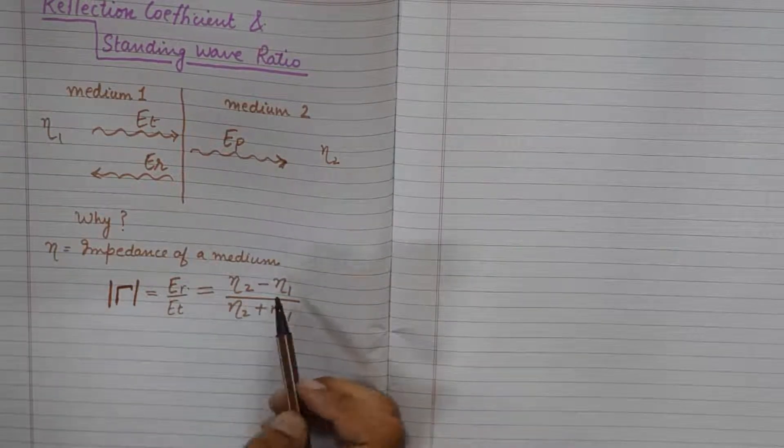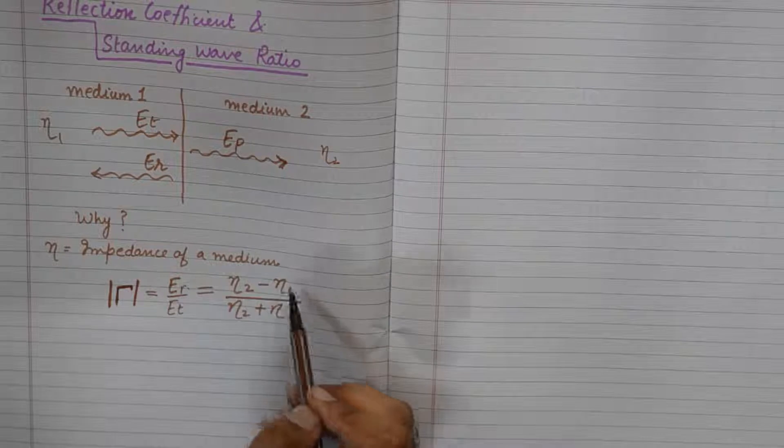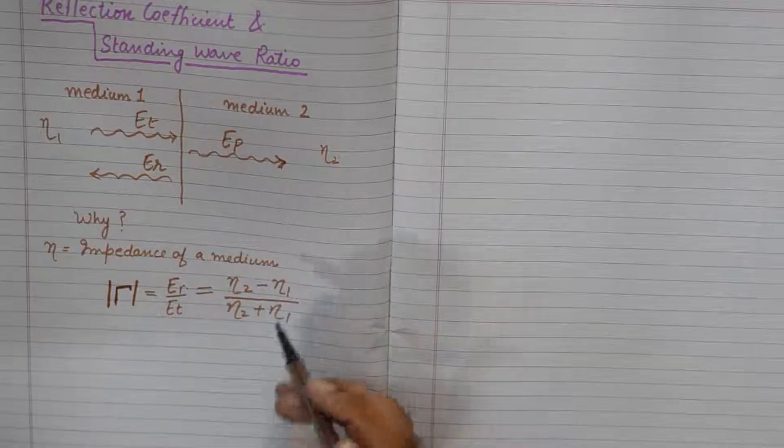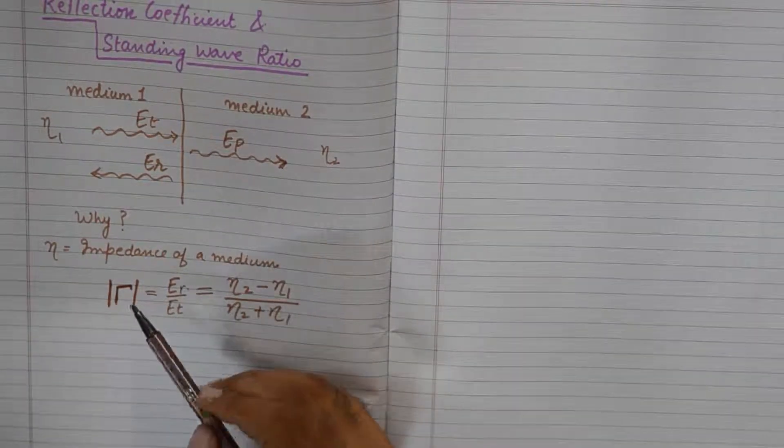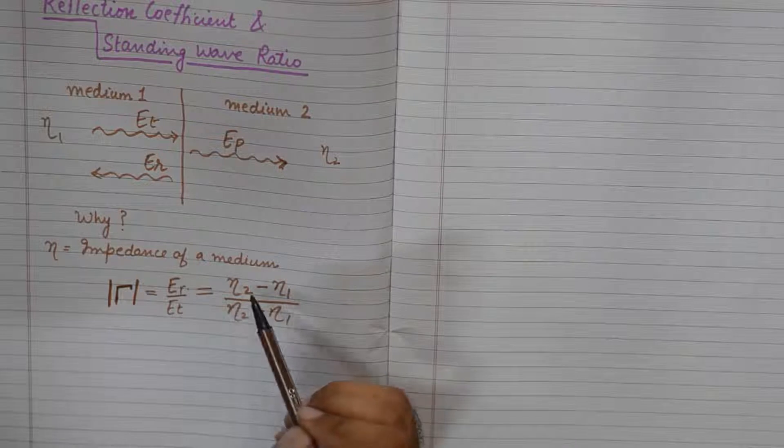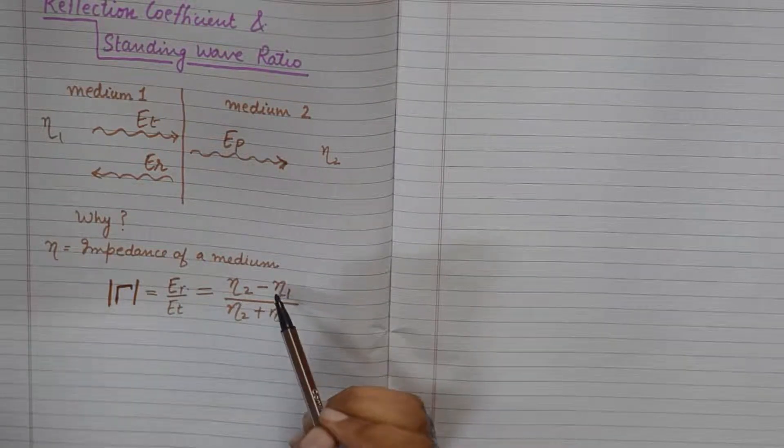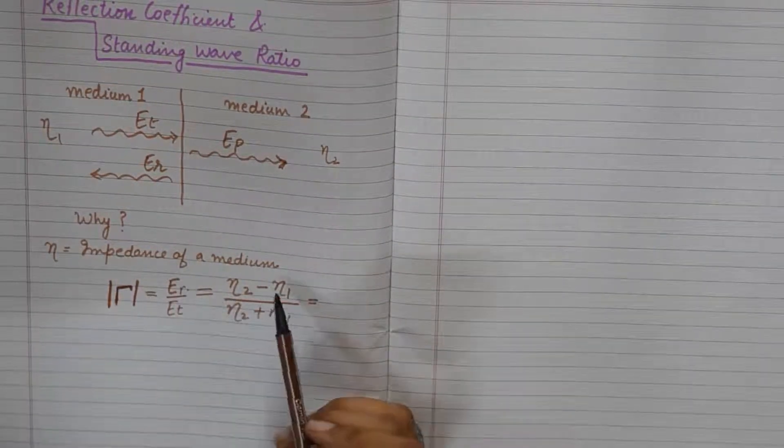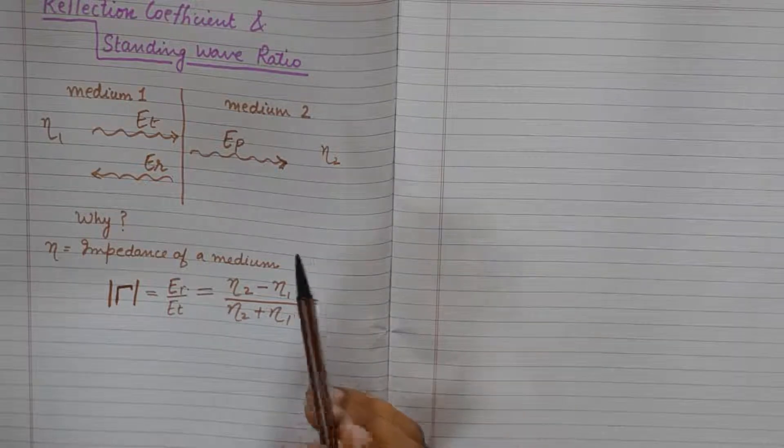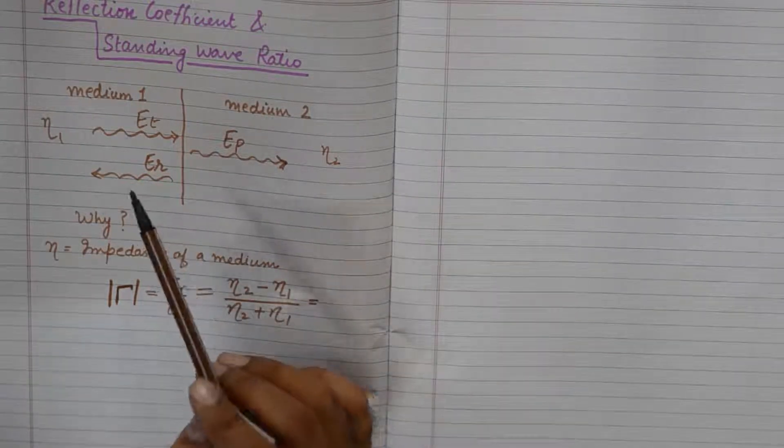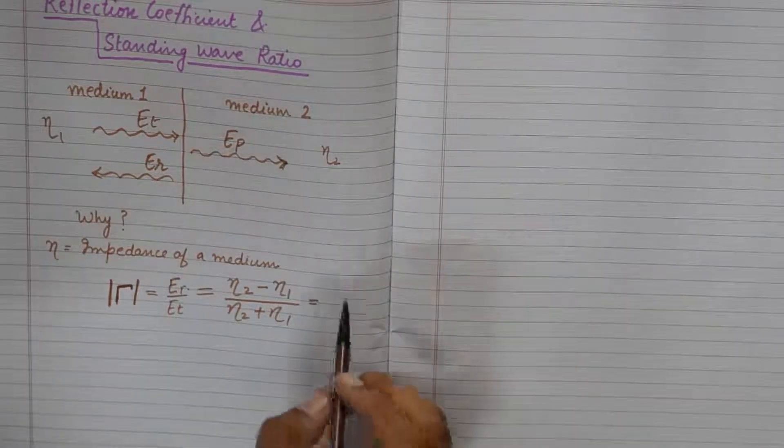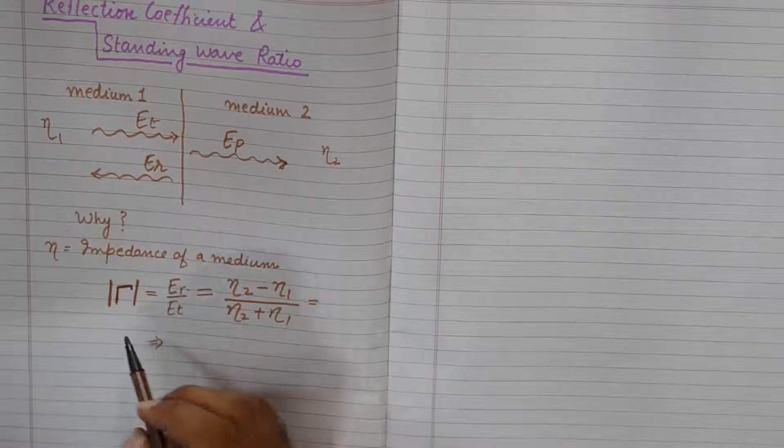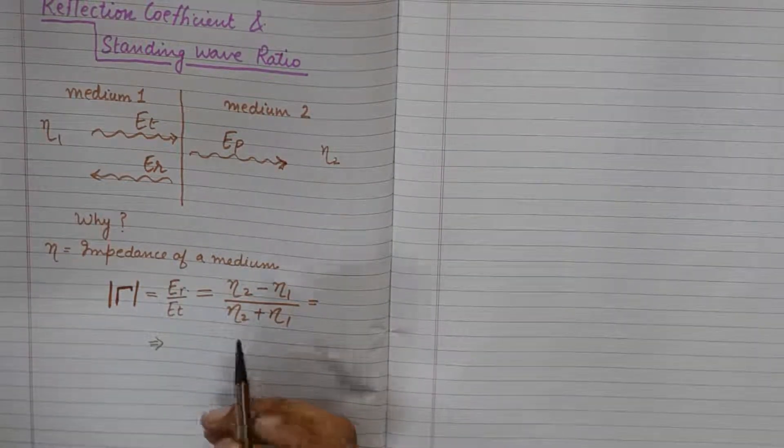That goes to show that if there is a difference of impedances during the transmission, there is bound to be some reflection. If you want your transmission to be absolutely reflection free, you need to keep the impedances to be equivalent to each other. And if the impedances are same, that means the wave is propagating in the same medium. So reflection coefficient is a fundamental and must have phenomena in any communication.